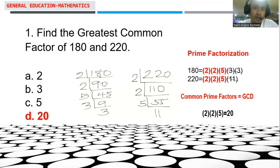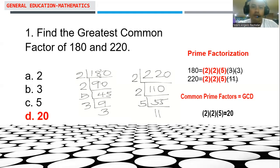So 20 is considered to be the greatest common factor of 180 and 220. We found it through the process of prime factorization.